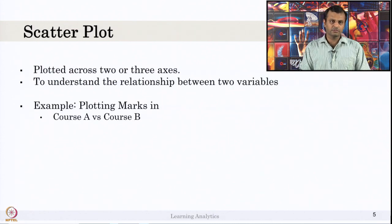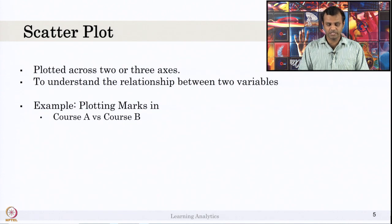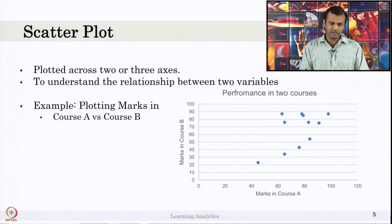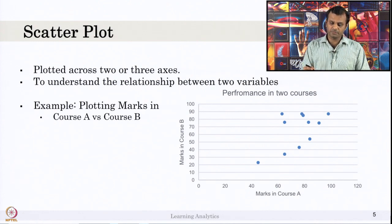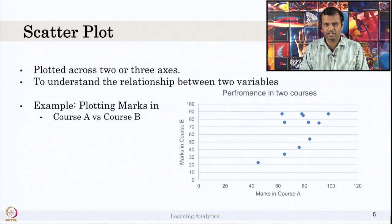Let us look at the scatter plot. Scatter plot is plotted across two or three axes — usually two axes is easy to compare. It is used to understand the relationship between two variables. For example, plotting the marks in course A and course B — we saw course A and course B marks shown in the box plot. I am plotting the marks of subject A and subject B in a scatter plot. I am not using all 60 students' data, I kept only 15 data points, so that it leads to a clearer figure.